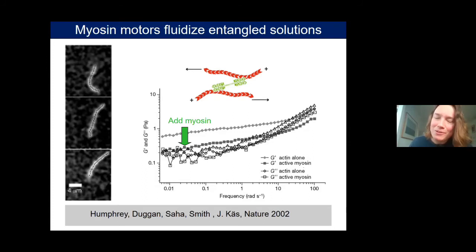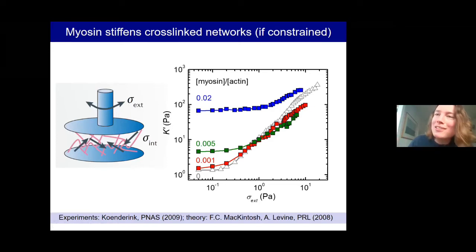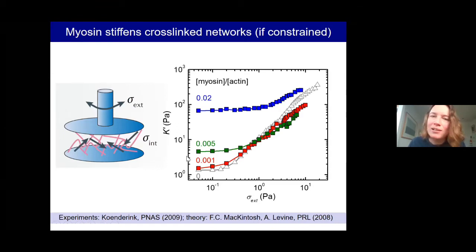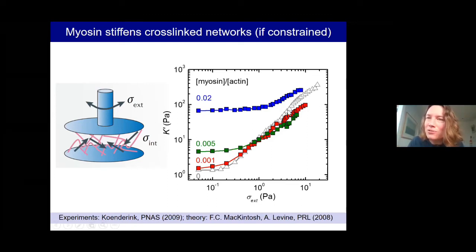If you do rheology with actin, myosin, and cross-linkers, myosin has the opposite effect — it stiffens actin networks. When motors are added in increasing amounts, the linear modulus goes up, and with additional external stress there is further stiffening, because motors generate internal stress that brings networks into a nonlinear stress-stiffened regime. But this only happens if the network stays attached to the boundaries — if unconstrained, the entire network pulls together and contracts macroscopically.